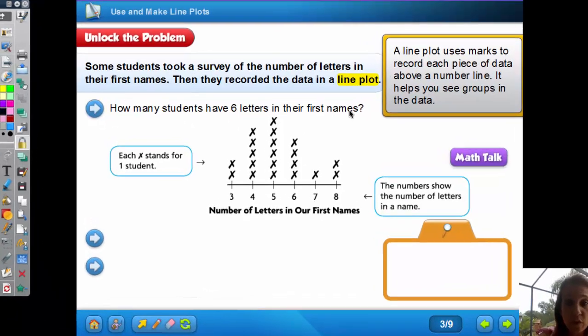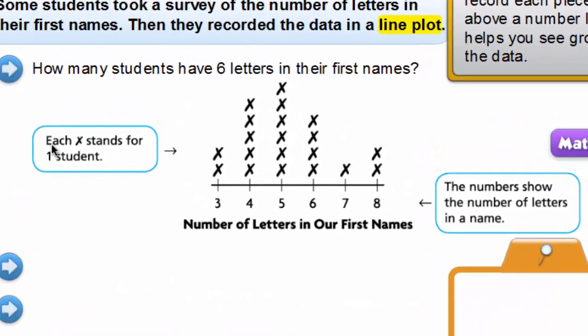How many students have six letters in their first names? Each X stands for one student. The numbers show the number of letters in a name. Here's the label that tells us what these numbers mean - it says number of letters in our first names.